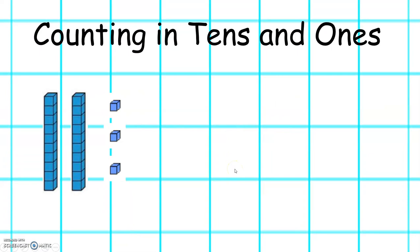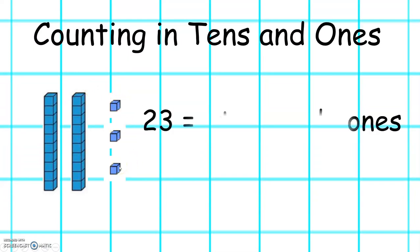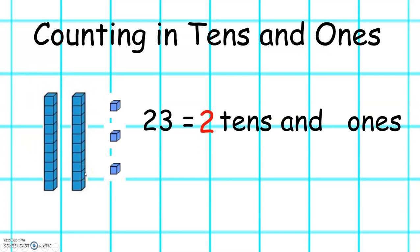Let's look at this number represented in Dienes. We have 10, 20, 21, 22, 23. So 23 equals — how many tens can you see? Well done. There are two tens. And how many ones are there? Excellent. There are three ones.